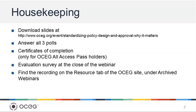Before we begin, I'd like to take a minute to go over a few housekeeping notes. First, regarding continuing education credit: we provide NASBA-approved CPE credit to you if you have an OSEG All Access Pass, which you can purchase individually or as part of a company's subscription. The All Access Pass includes many benefits in addition to CPE credit for webcasts, such as access to all OSEG resources and on-demand education series. If you do have an All Access Pass and would like a certificate of completion for CPE for this event, please be sure to stay with us for the entire hour and to answer all the polls.